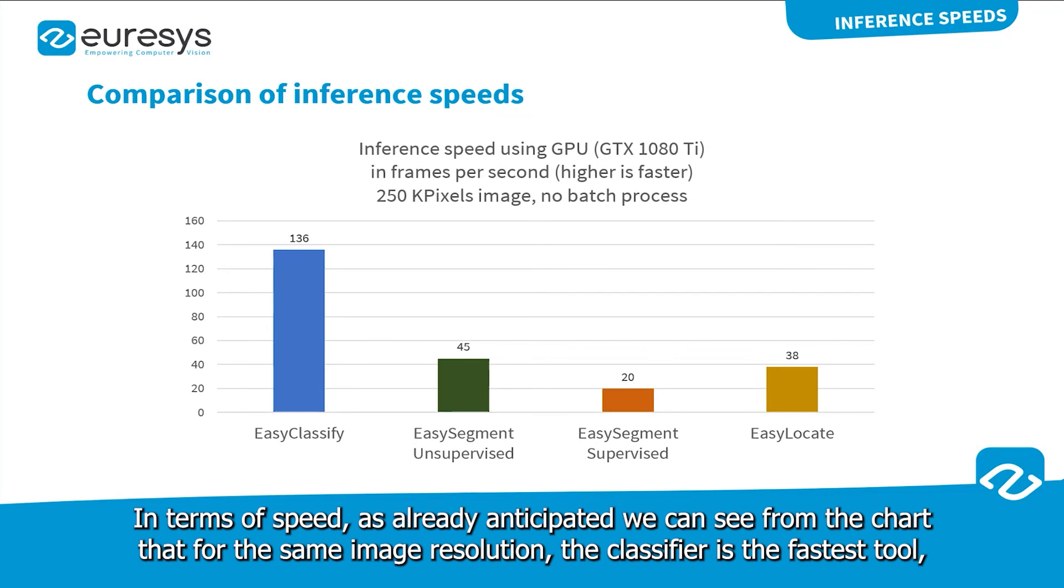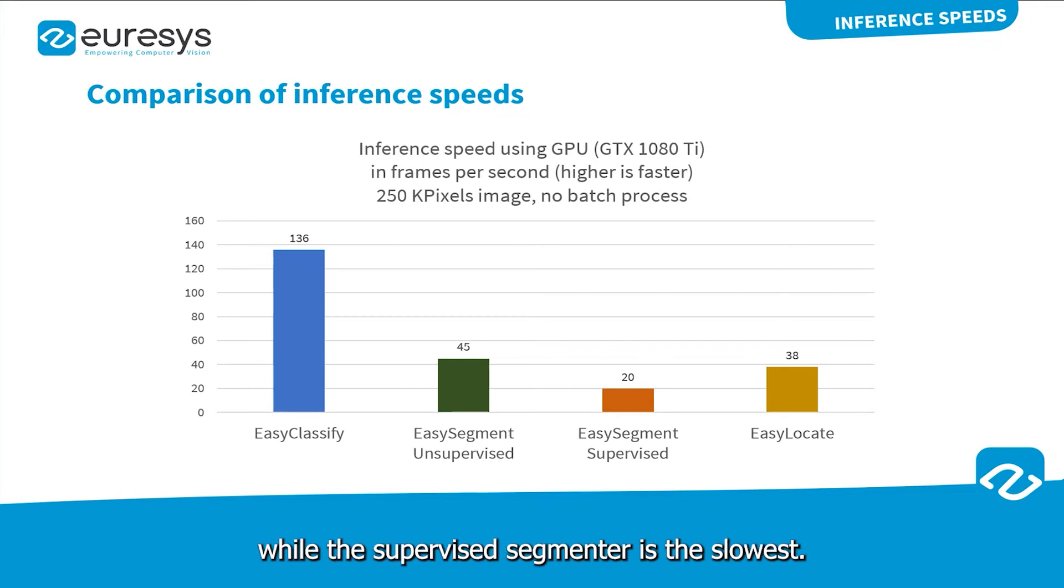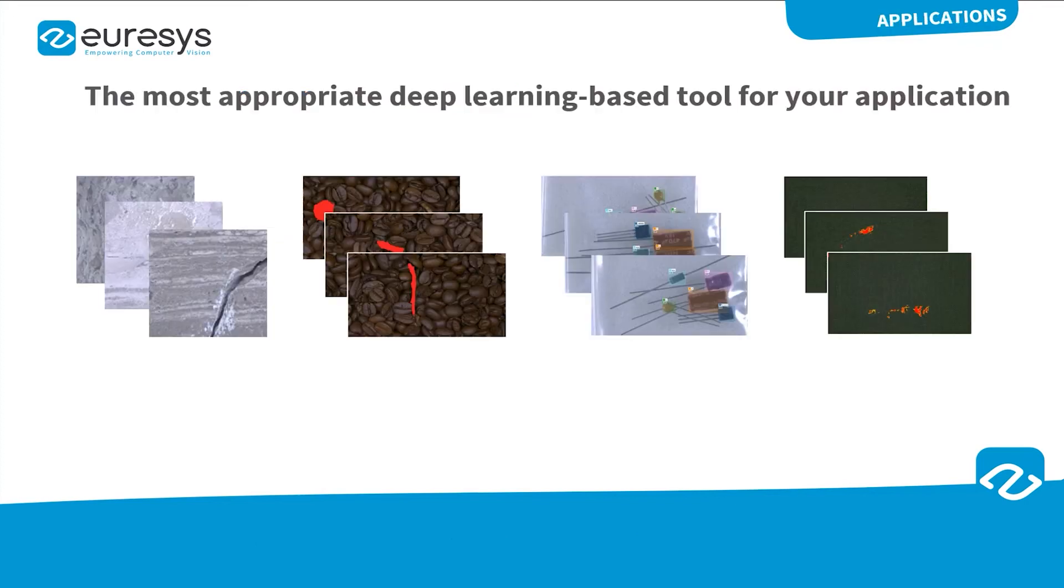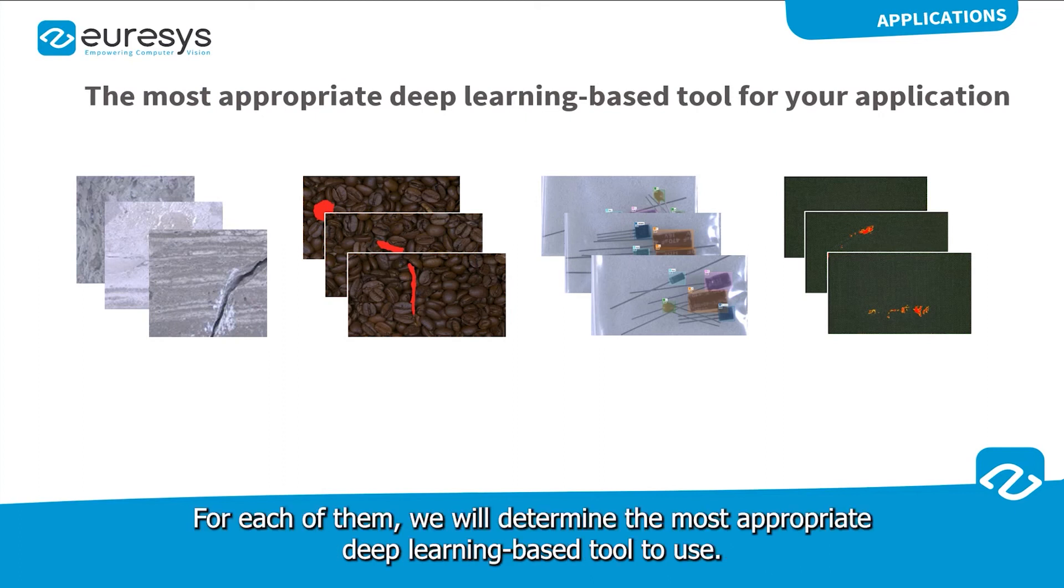In terms of speed, as already anticipated, we can see from the chart that for the same image resolution, the classifier is the fastest tool while the supervised segmenter is the slowest. Now, let's consider several types of applications. For each of them, we will determine the most appropriate deep learning based tool to use.